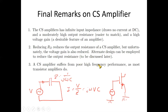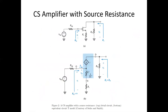The Common Source Amplifier suffers from poor high-frequency performance, as do most transistor amplifiers. At very high frequencies, parasitic capacitances have impedance Z = 1/(jωC). As ω increases, Z approaches zero, causing large currents (I = V/Z = jωCV), leading to very poor high-frequency performance. In the next part of this video, we will consider the CS amplifier with source resistance.